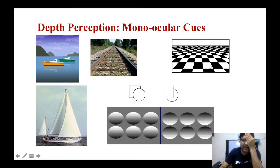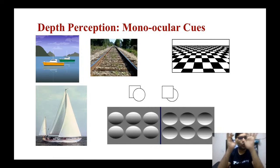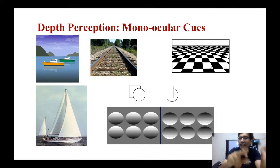This is a railway line, and this area is nearer to me while that area is farther. This is a chessboard where the larger squares are in front of us, and as we go further the squares become smaller and more distant. Similarly in the sea we have two boats at different distances, and with circles we can tell whether a shape is hollow or elevated. So even with one eye you can tell whether a picture has 3D perception — these are called monocular cues.